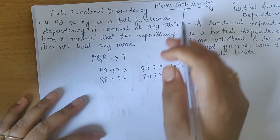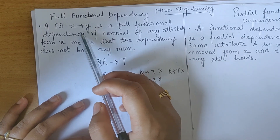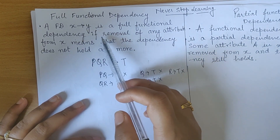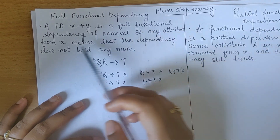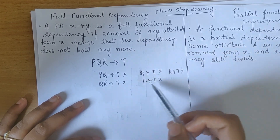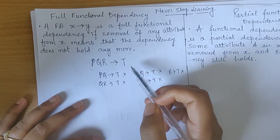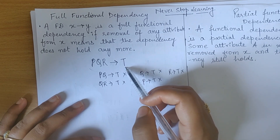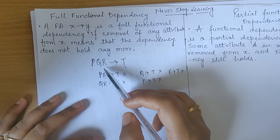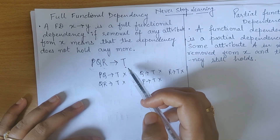So understand the definition again: a functional dependency X determines Y is a full functional dependency if removal of any attribute from X means this dependency does not hold. With any subset, I am not able to find T. Only if I have all the attributes PQR combined together will I be able to find this attribute.